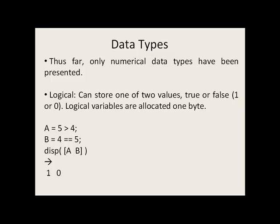So far we've only discussed numerical data types, but there are others as well. There are logical data types, or logical variables, and these can only store one of two values — true or false, or one for true and zero for false. Logical variables are allocated one byte each. You can create logical variables by putting a logical expression on the right side of the equal sign. For example, five greater than four is true, so A will get the value of one. For b, four equal to five is false, so zero will be stored in b.